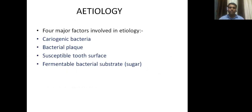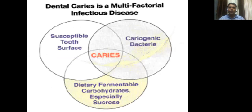Etiological factors: four major factors are involved in the etiology of dental caries — cariogenic bacteria, bacterial plaque, susceptible tooth surface, and fermentable bacterial substrata, that is sugar. When all these are combined, they produce a mechanism to form dental caries.